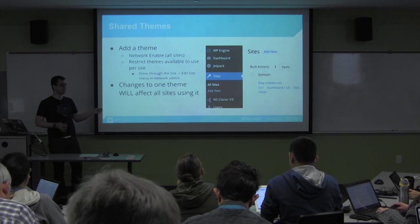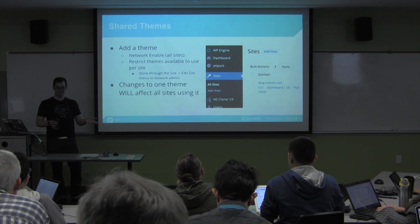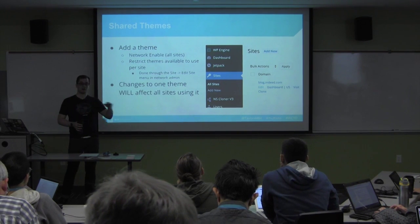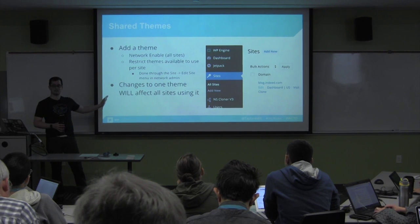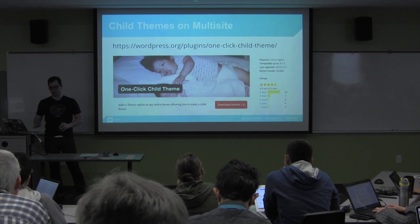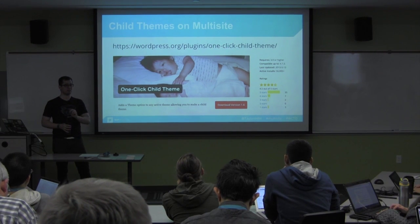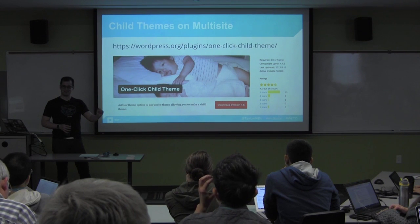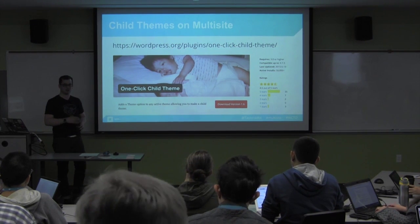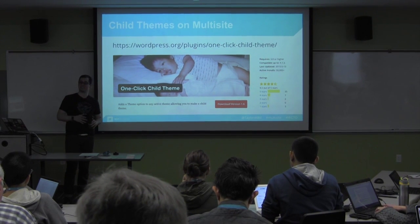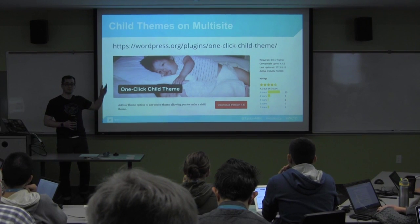Shared themes — you can share themes across the network. This is great for providing a subset of approved, code-reviewed themes. You can network-enable themes, force everyone to use them, or opt in for certain sites to use certain themes. Changes to themes affect all sites using them. To get around that, use child themes. There's a plugin that creates a child theme for every sub-site in the network — instead of editing the parent theme, you edit the child theme for each sub-site. This also helps you keep themes up to date, which is one of the biggest security vulnerabilities.